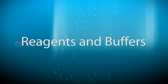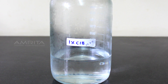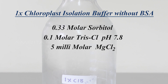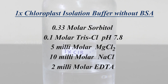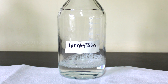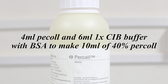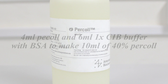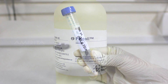Reagents and buffers used: 1x chloroplast isolation buffer. To make 10 ml of 40% percol, use 10 ml of 40% percol for 6 ml of chloroplast suspension. 80% acetone.